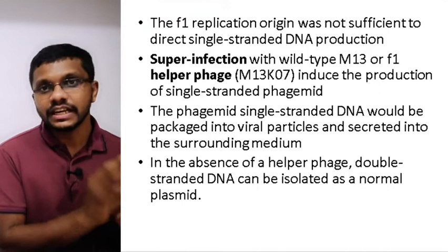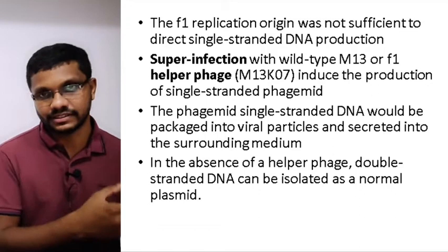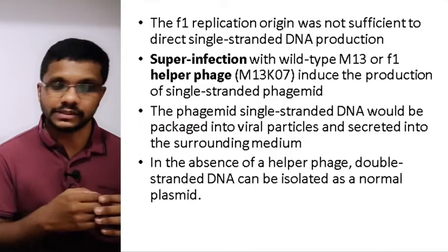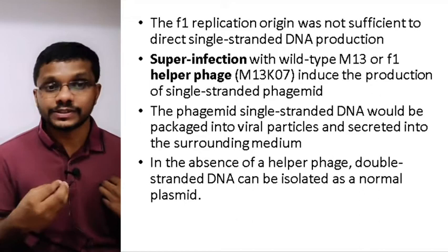Because of the peculiar nature of the F1 origin of replication, it cannot replicate by itself. It needs specific proteins produced by the M13 virus, and those proteins are absent in the phagemid. Additionally, to form viral particles, it also needs capsid proteins, which are also missing in the phagemid.